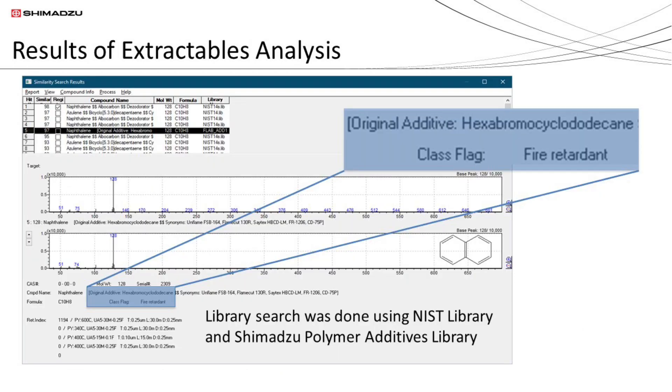The extractables identification was performed using NIST library and Shimadzu Polymer Additives library. The polymer additives library has additional information such as possible original additive name, if the detected compound is a breakdown of an additive, as well as the additive type, for example, a fire retardant.